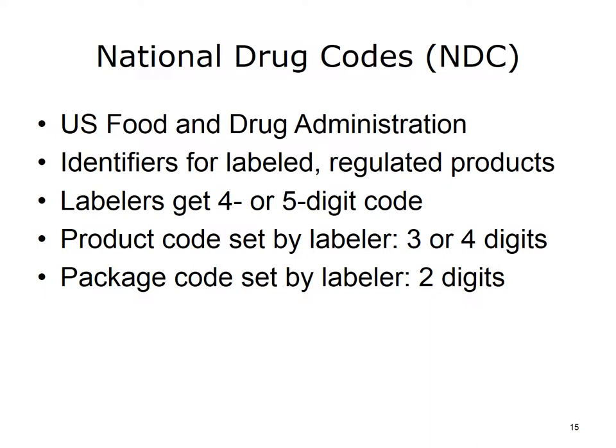NDC codes are used by the FDA. It is a list of all drugs manufactured for commercial distribution. An NDC code is a 10-digit, 3-segment number which serves as a product identifier for human drugs and is also used for reimbursement. It identifies the labeler, product, and trade package size.